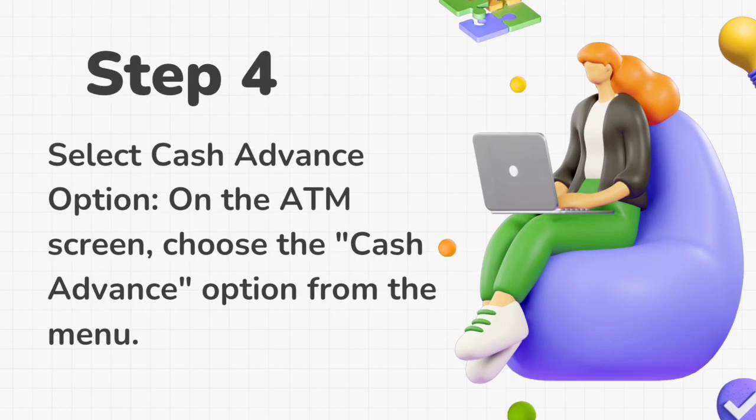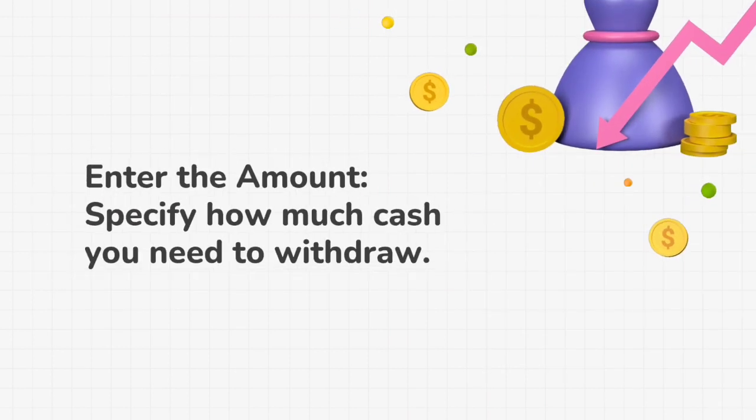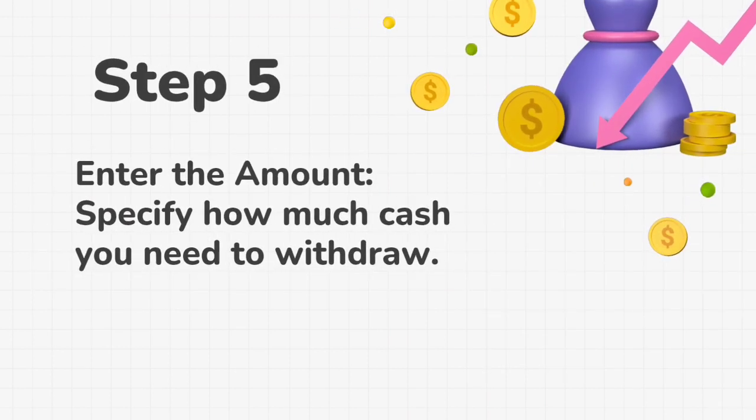Step 4: Select the Cash Advance option. On the ATM screen, choose the Cash Advance option from the menu. Step 5: Enter the amount. Specify how much cash you need to withdraw.